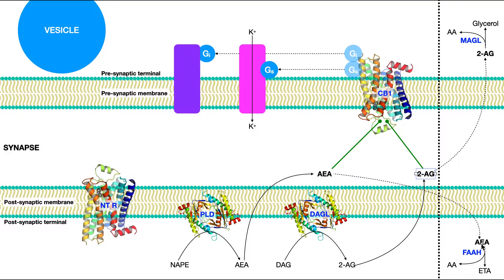There are a couple of enzymes here. Up here we have monoacylglycerol lipase. Notice this enzyme is in the presynaptic membrane. Down here we have FAAH, fatty acid amidohydrolase. This is actually in the postsynaptic cell. It turns out that 2-AG is going to be taken up into the presynaptic cell by passive diffusion and destroyed there, whereas anandamide, or AEA, is going to be taken up passively into the postsynaptic cell and destroyed there.